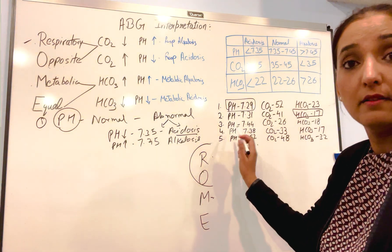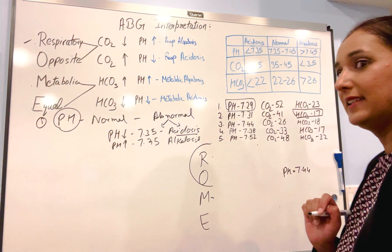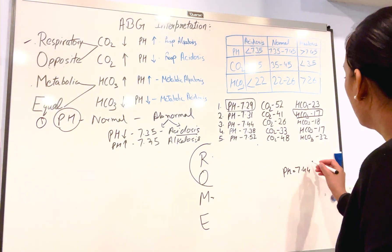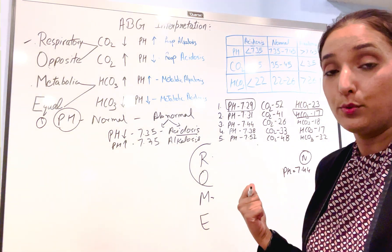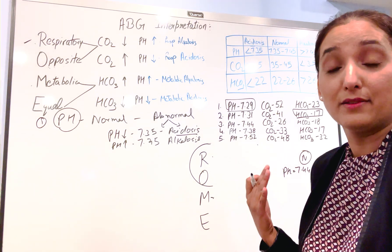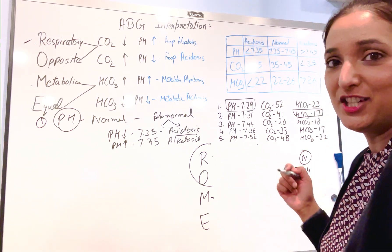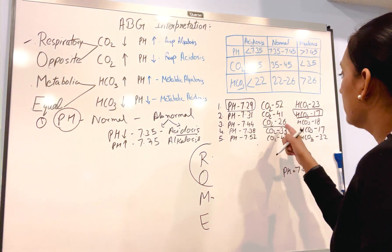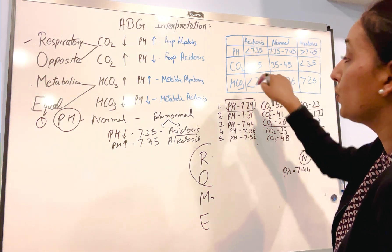Let's do the third example. pH is 7.45 — that means it's normal. If it's normal, that means it's compensated. Next, carbon dioxide is 26, so carbon dioxide is going down.